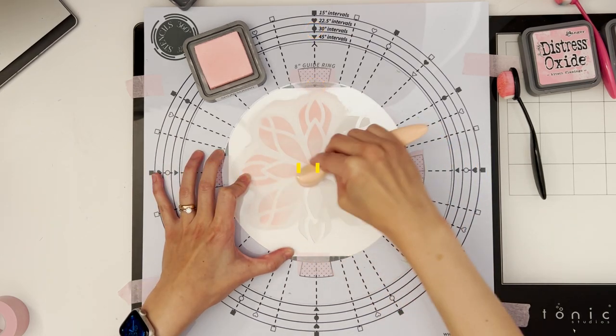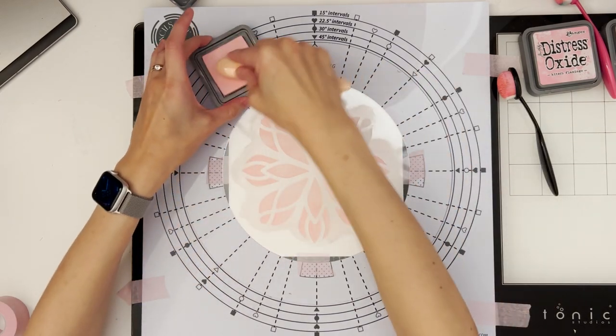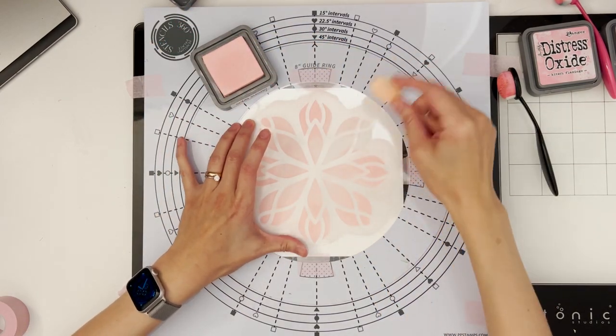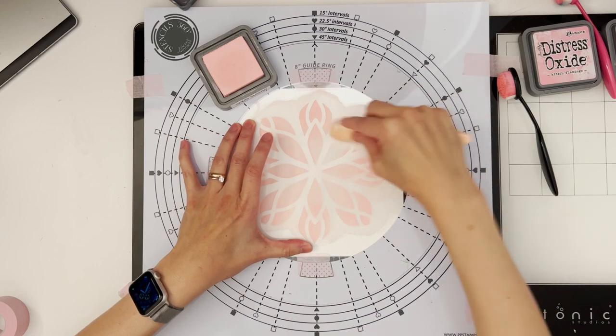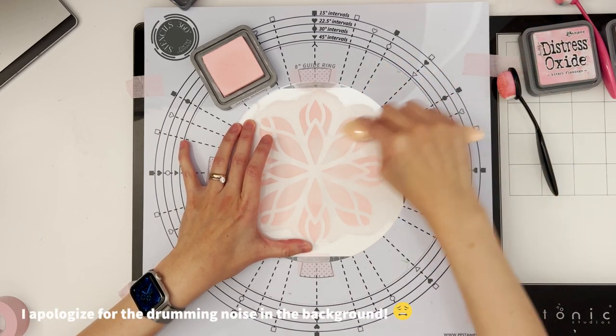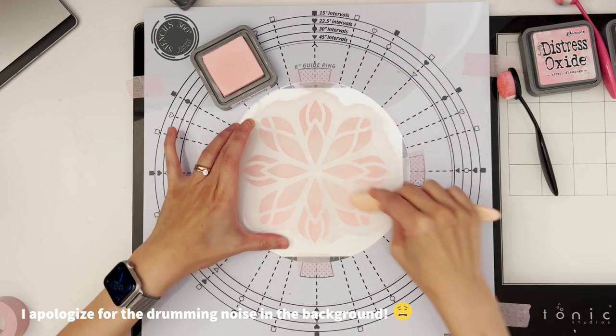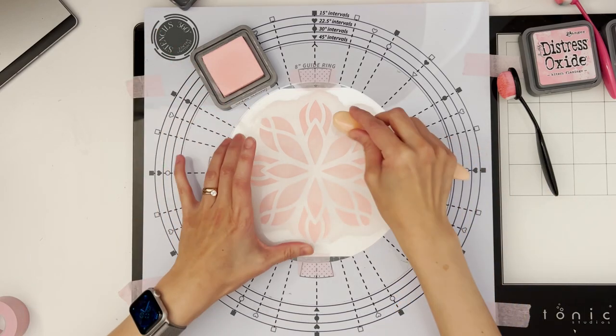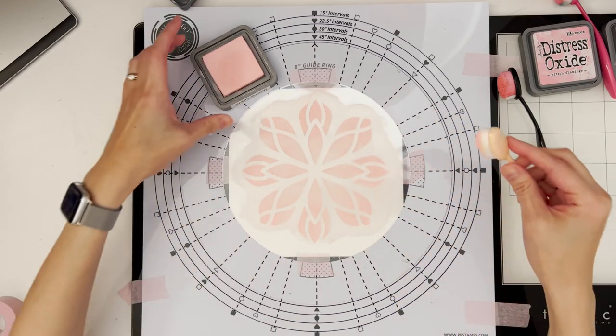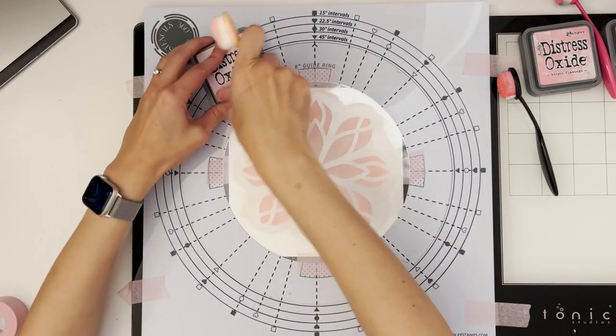You'll notice that this stencil is made of transparent mylar while most of the other ones we have are in milky white. Since this particular design covers a large part of the stencil, even with just minimal number of turns, it is going to give you a lot of overlays. Therefore, if the stencil is clear, you'll have a much better visual on the inked pattern after each turn without having to lift your stencil up.